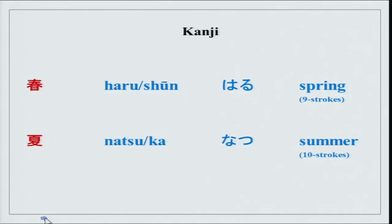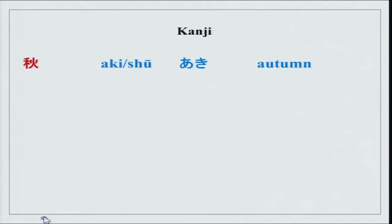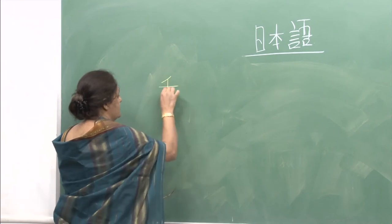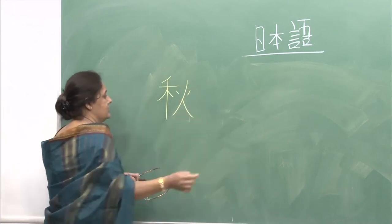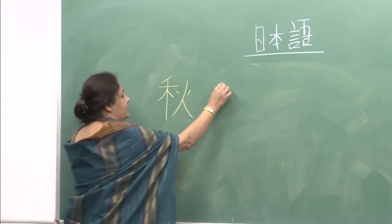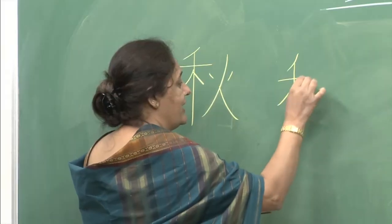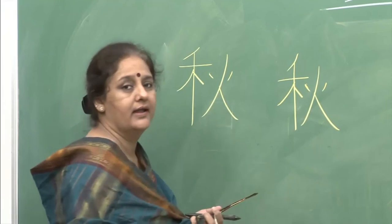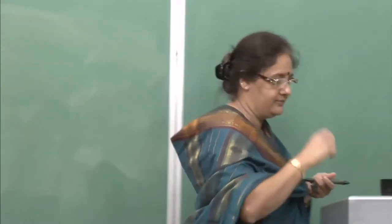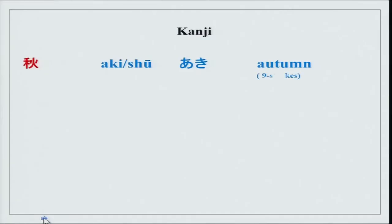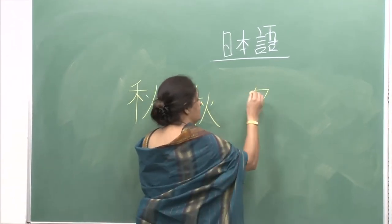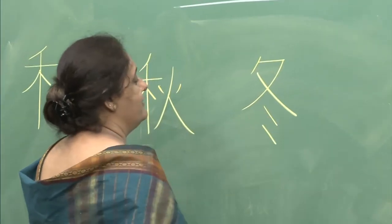After this we have Aki, meaning autumn — 1, 2, 3, 4, 5, 6, 7, 8 and 9 — it is a 9-stroke character. Aki and Shu are the two readings. Then we have Fuyu, which is winter — 1, 2, 3, 4 and 5 — it is a 5-stroke character. You can see all four kanji characters together now.